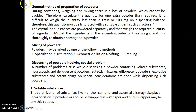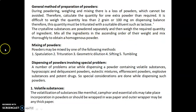General method of preparation of powders: during powdering, weighing, and mixing, there is a loss of powder which cannot be avoided. Therefore, calculate the quantity for one extra powder than required. It is difficult to weigh a quantity less than 2 grains or 100 mg on a dispensing balance, as one grain equals 60 mg. Therefore, this quantity must be triturated with a suitable diluent such as lactose. The crystalline substances are powdered separately, then weigh the required quantity of each ingredient. Mix all ingredients in ascending order of their weight and mix thoroughly to obtain a homogeneous powder.